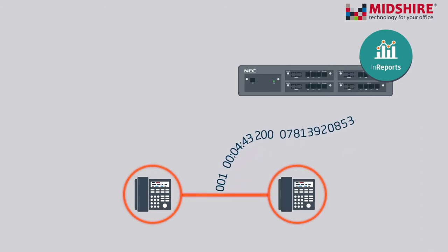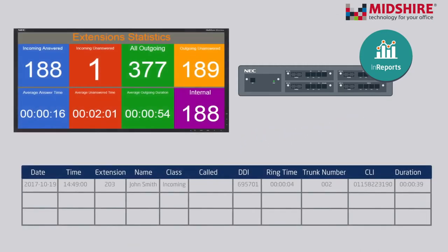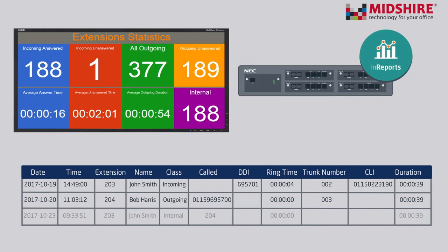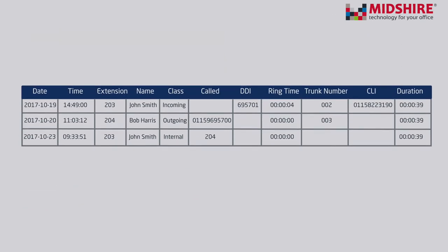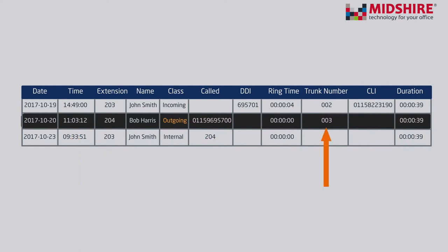Each call record contains key information about the call, such as the call type — this can be incoming, outgoing, or internal. Further details are available in the call record. For outgoing calls, the call records contain the extension number, time of call, telephone number dialed, call duration, and trunk number.